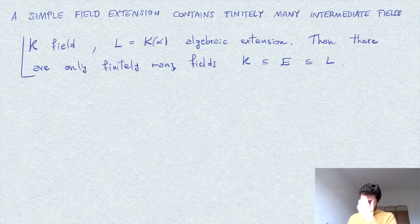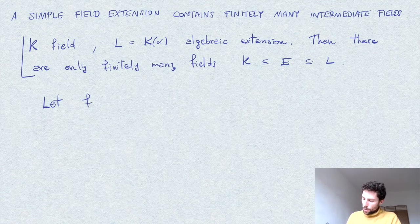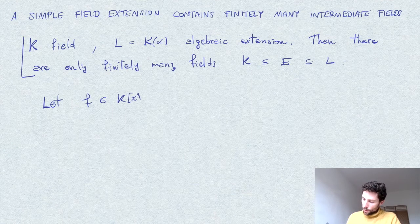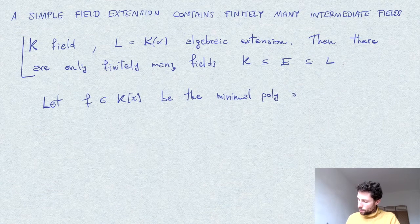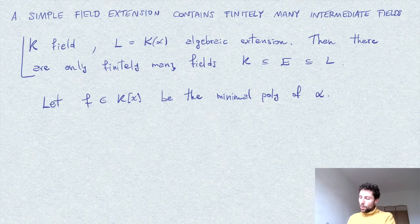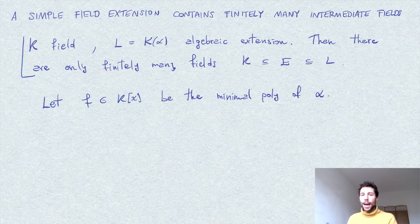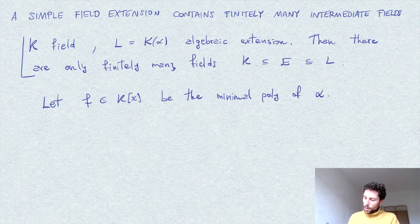The idea of how to prove this is the following. Let me denote by f the minimal polynomial of α — a monic polynomial with coefficients in k[x]. The idea is to show that we can always write any intermediate field E as the extension given by k adjoined with the coefficients of a fixed polynomial which divides f.